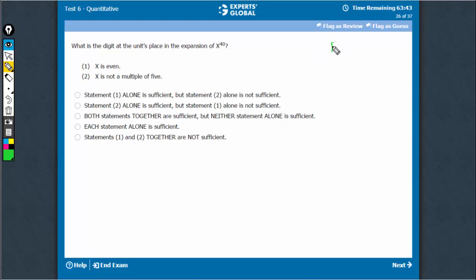The concept goes that you have to divide the power by 4 to find the remainder, whatever is the remainder, you have to take the base raised to power remainder.